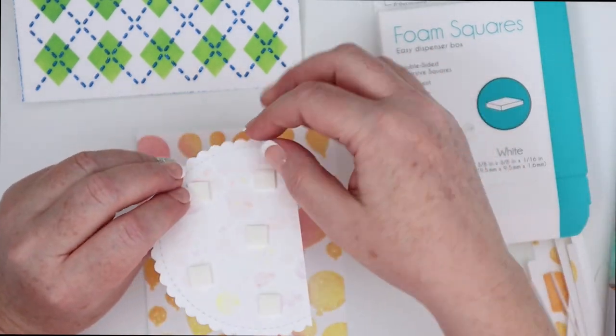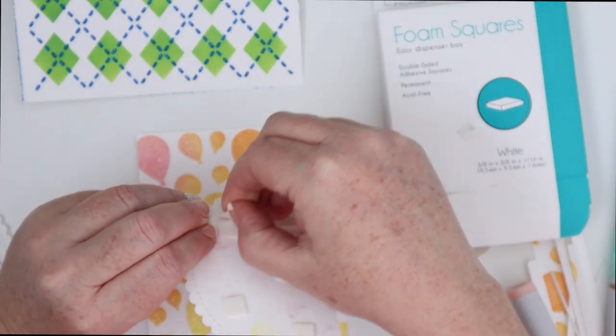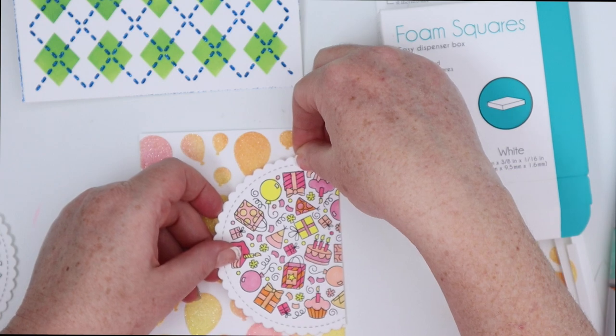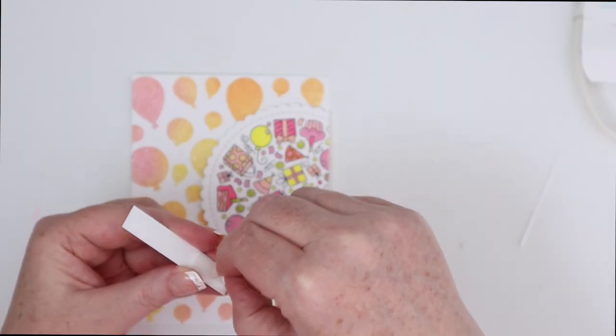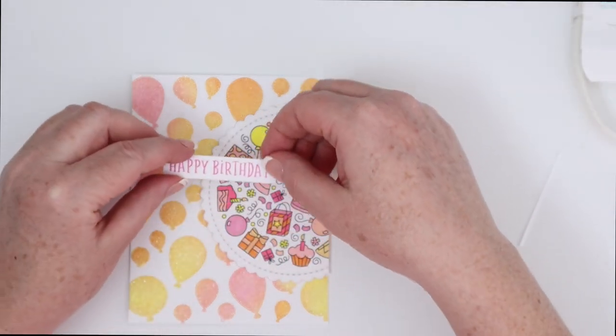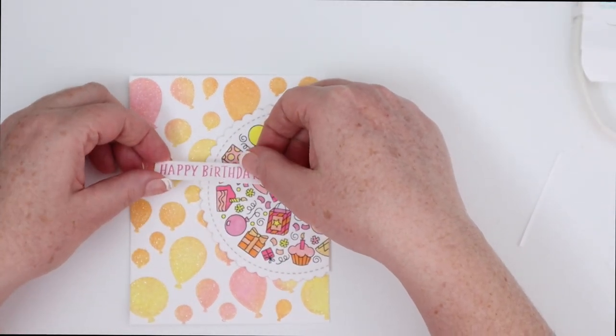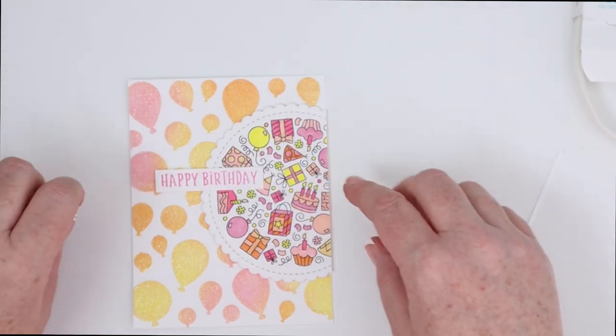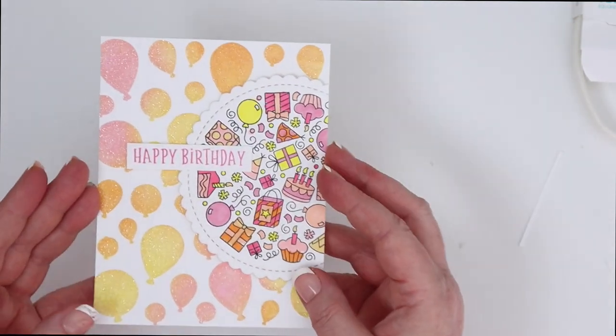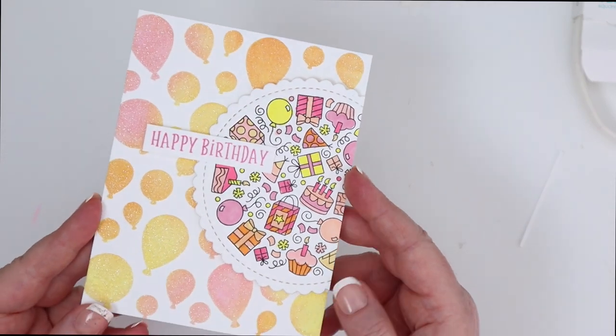I cut the circle just a little bit on one side so that I could have it off to the right hand side of my panel because I didn't want to cover up all those balloons. I love how they turned out. Then I stamped a happy birthday sentiment from the stamp set and put it on a little strip of cardstock and then pop that up on the left hand side so it just laid on the circle on the right hand side. Super simple.